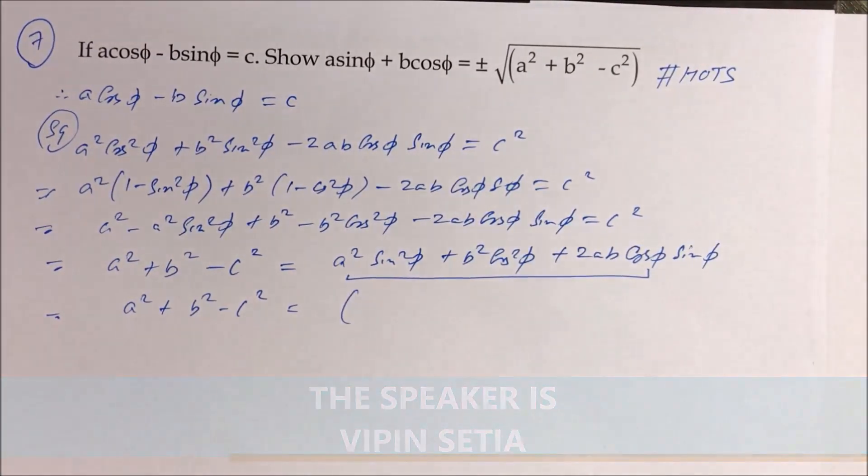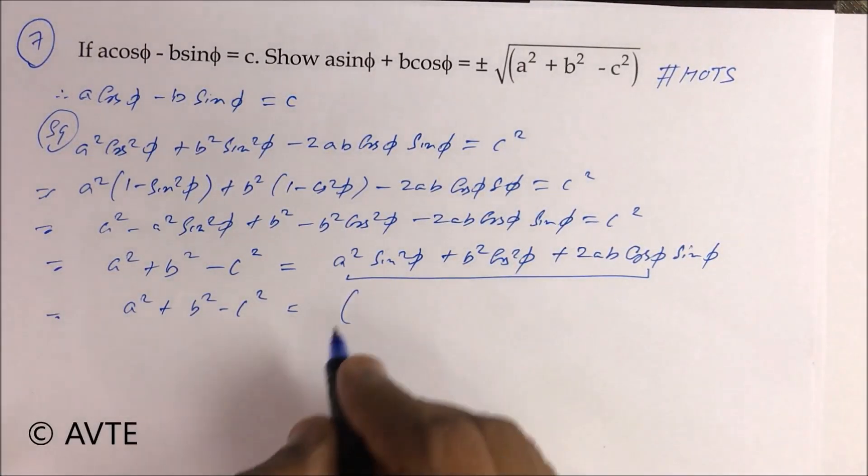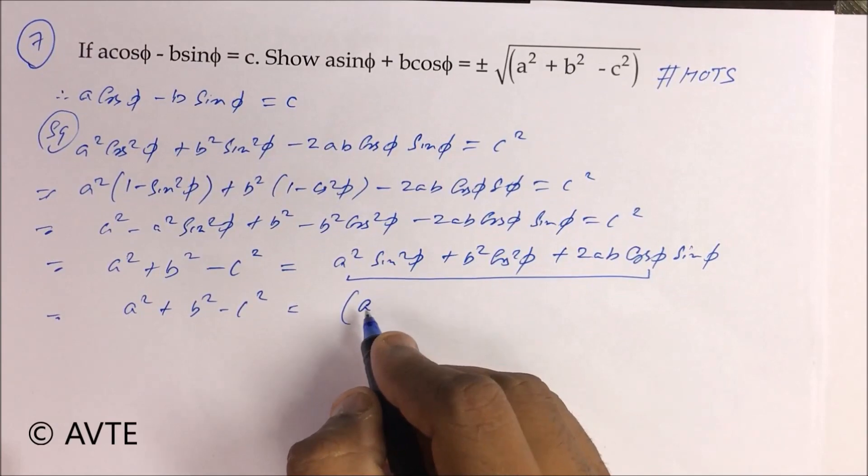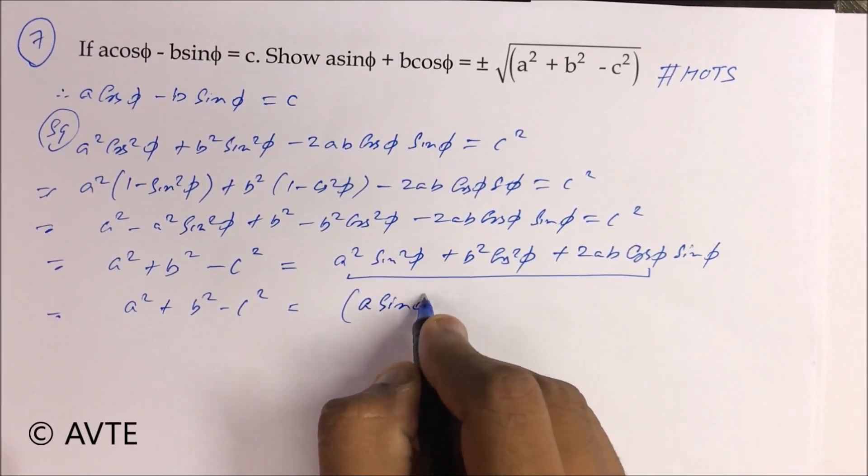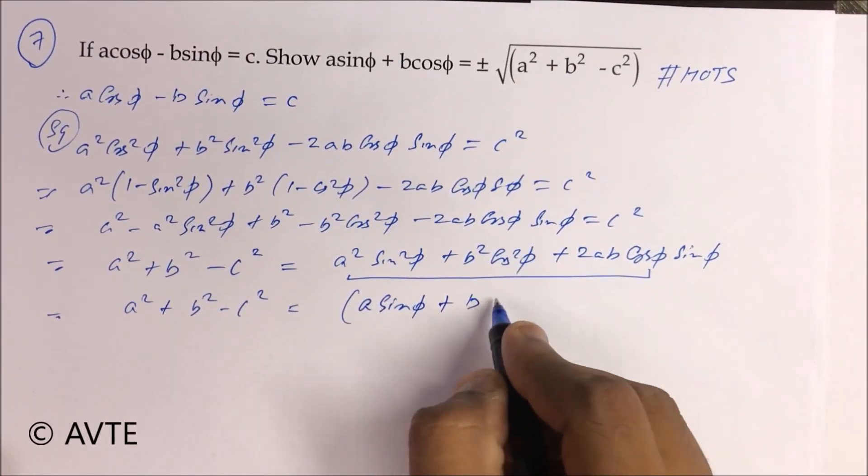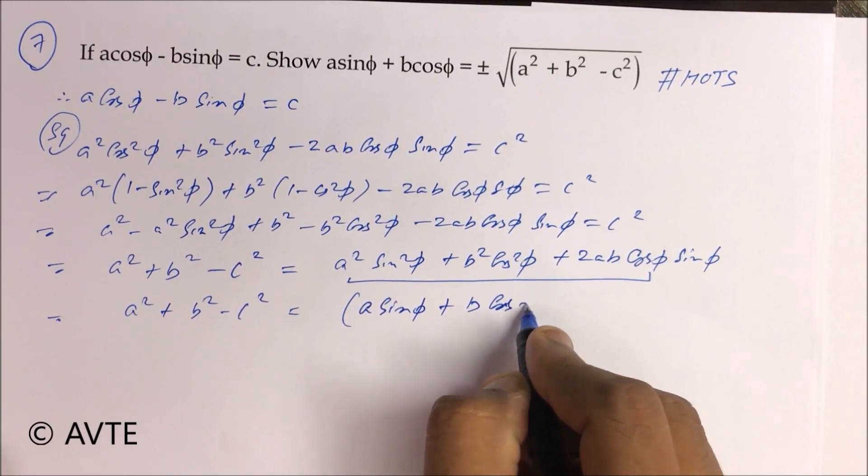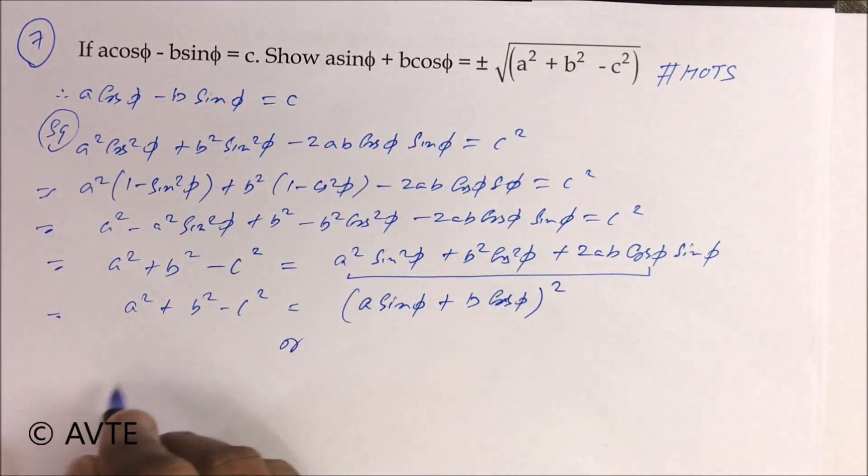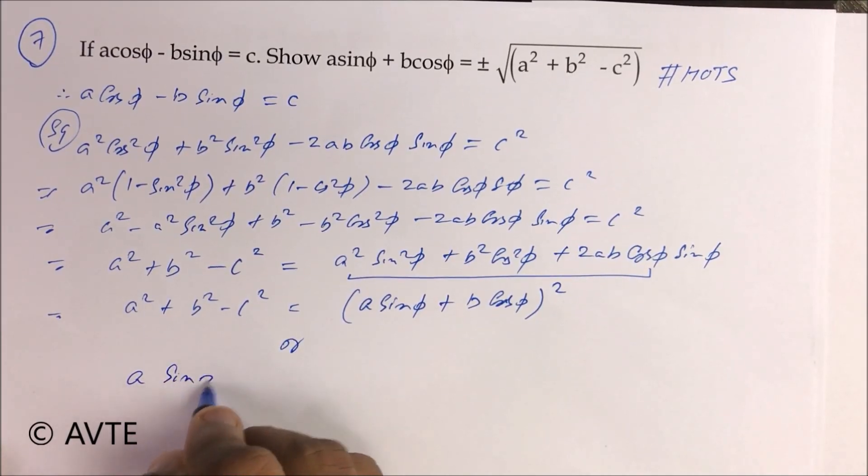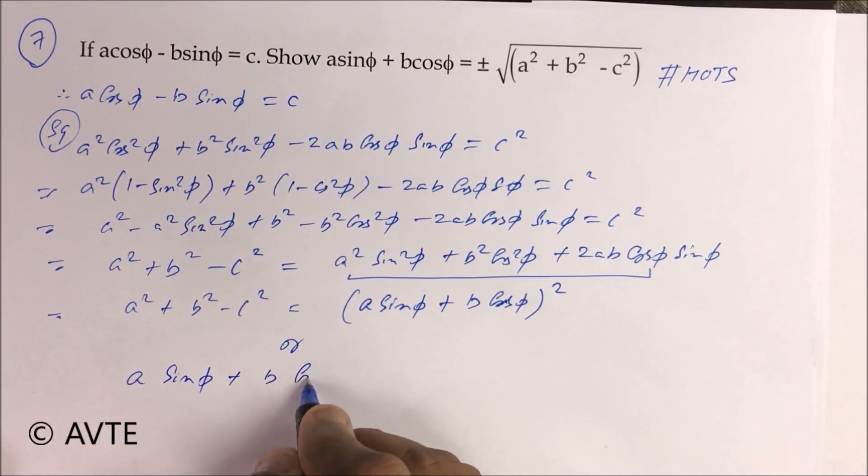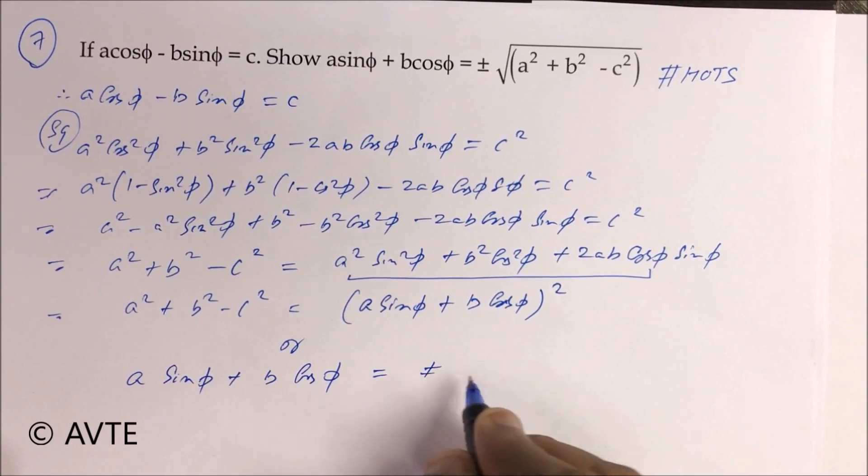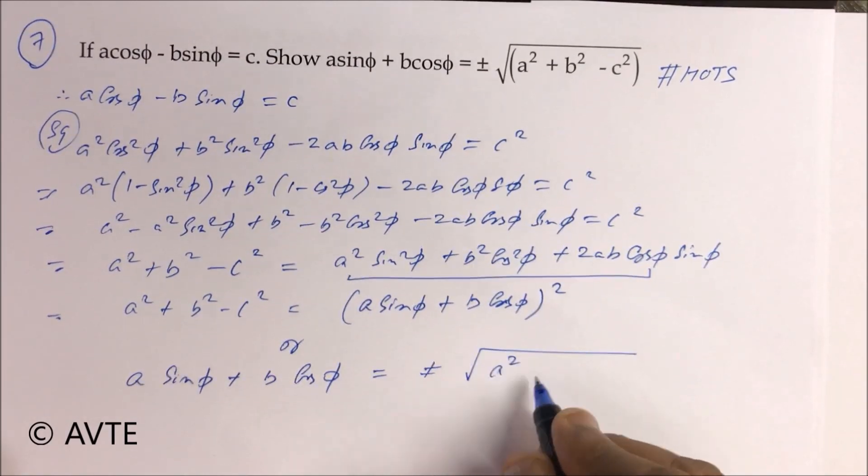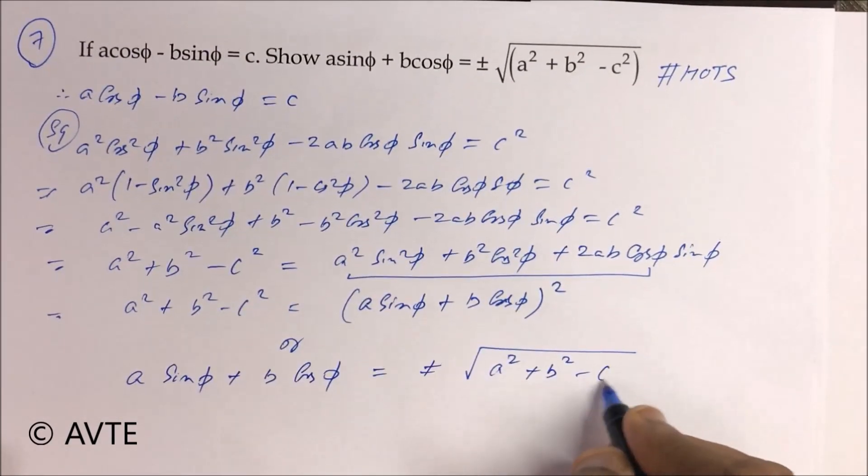you have A plus B whole square. Who is your A? Your A is A sin φ and your B is B cos φ whole square. Now, if you take a root both the side, then A sin φ plus B cos φ is equal to plus minus under root A square plus B square minus C square.